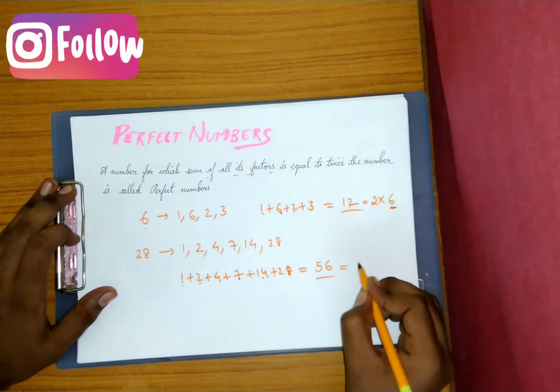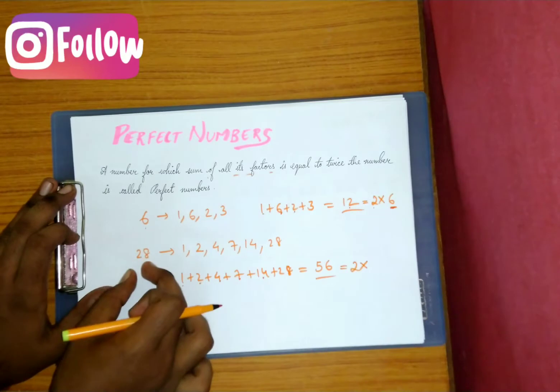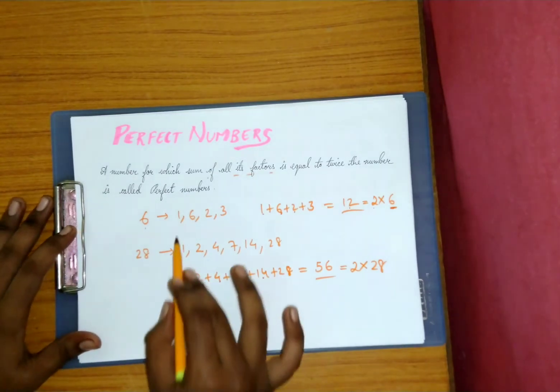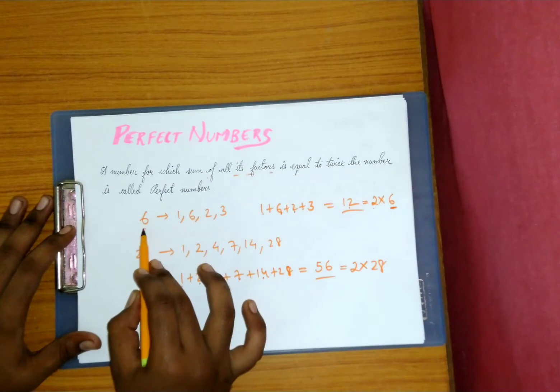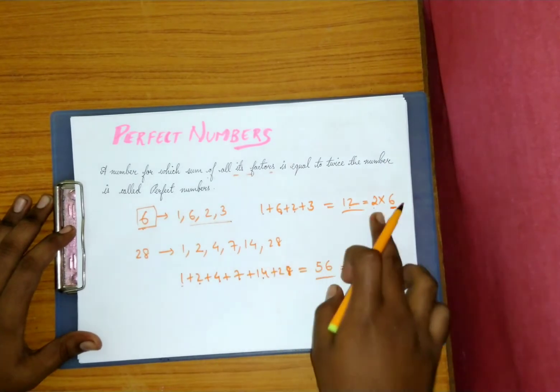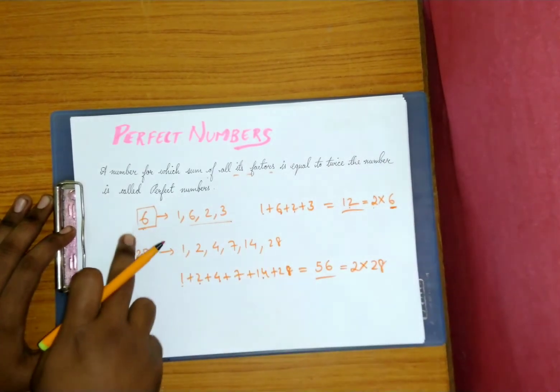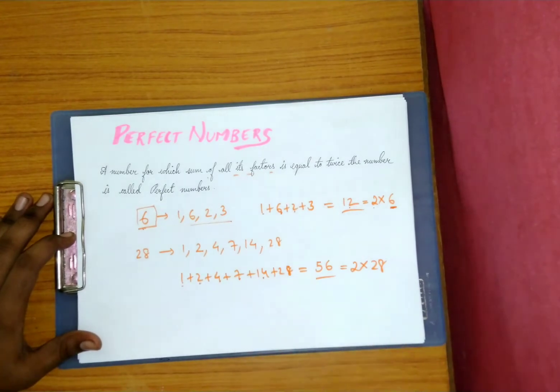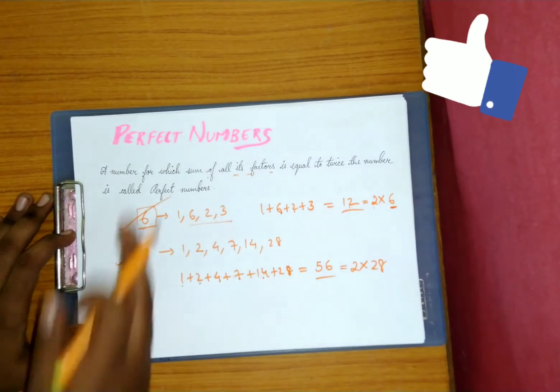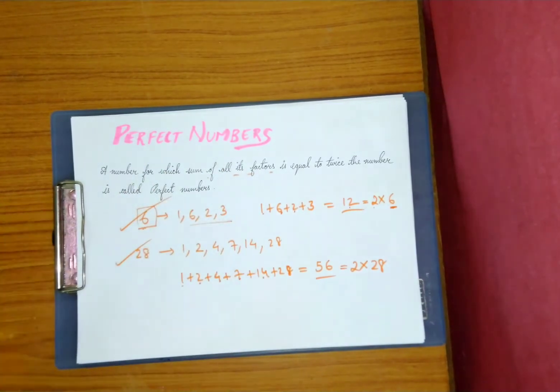Observe here, 56 is twice of that number. Which number? This question number itself. 2 into 28, when you do you will get 56, that is the sum of these factors. Observe here carefully, when the number is 6, when you add its factors you will get a number that will be equal to twice of this original number for which we are finding the factors. So we can say that 6 and 28 are perfect numbers.